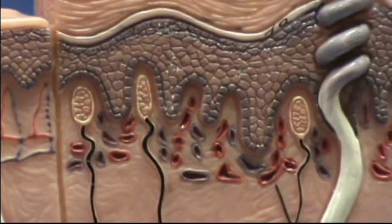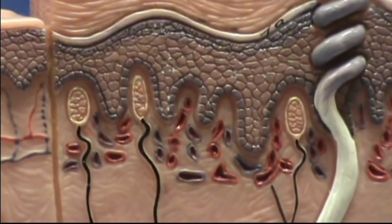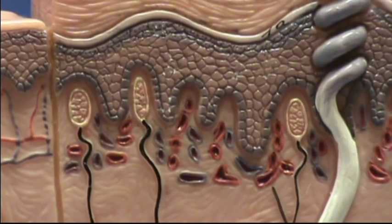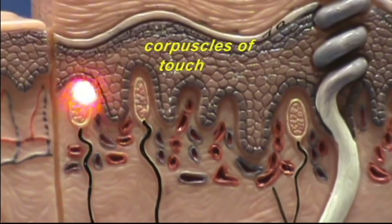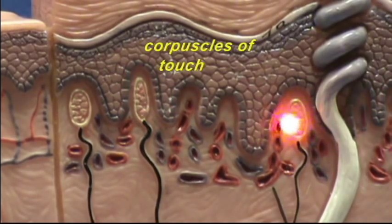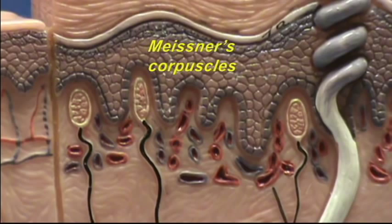Right over here in the papillary layer, we can see three corpuscles of touch — one right over here, one over here, and one right over here. Remember, these are also known as Meissner's corpuscles.